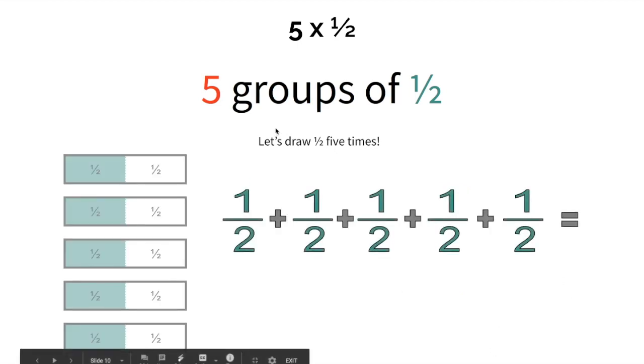Now, if we were to add them, because multiplication is the same thing as repeated addition, we'd have 1, 2, 3, 4, 5 groups of 1 half. And we're not going to add the denominator. So really, we just need to add the numerator, which I see the number 1 five times. So that's easy, 5 halves.